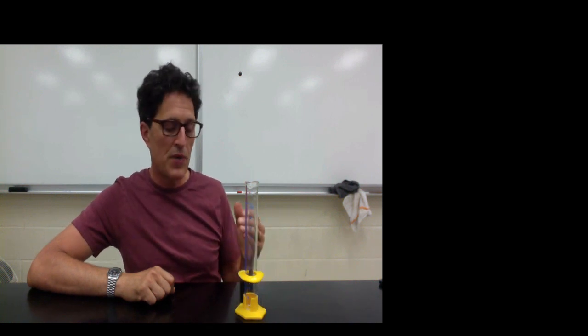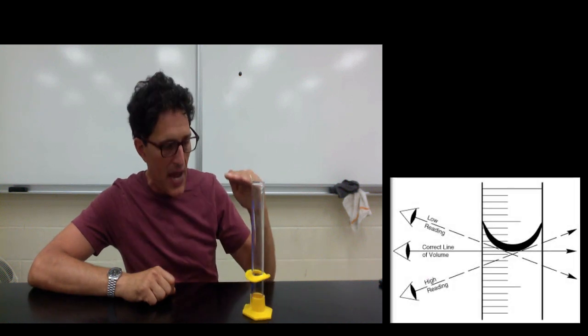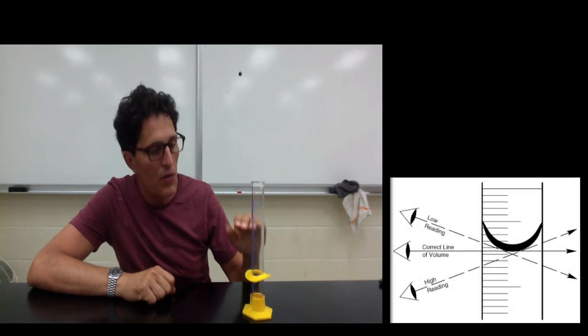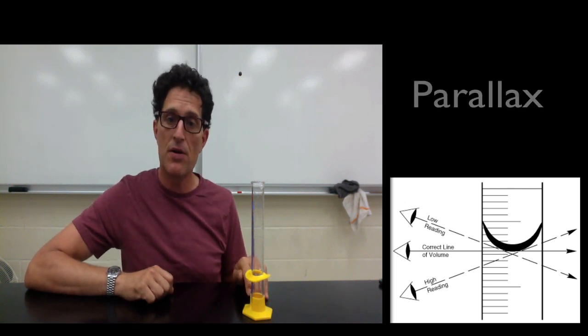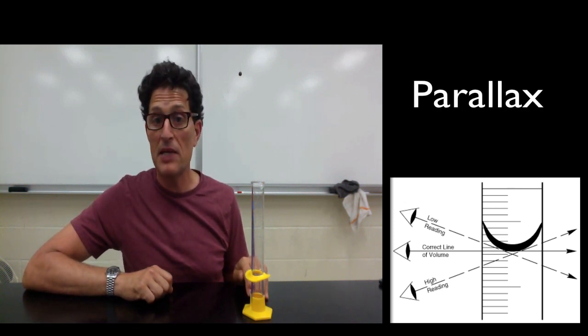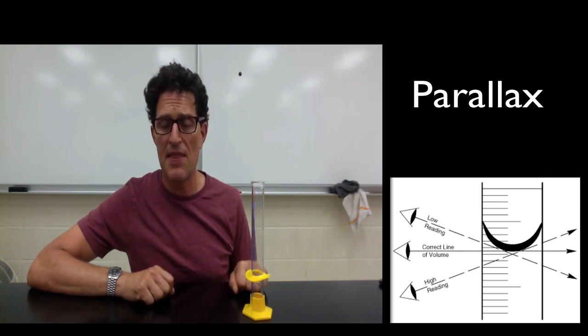Next, you want to make sure that you're reading the volume at eye level which means that you need to move your head down to the volume in the graduated cylinder to avoid something called parallax. And I'm expecting that you'll research parallax and find out what exactly the problem is that it creates.